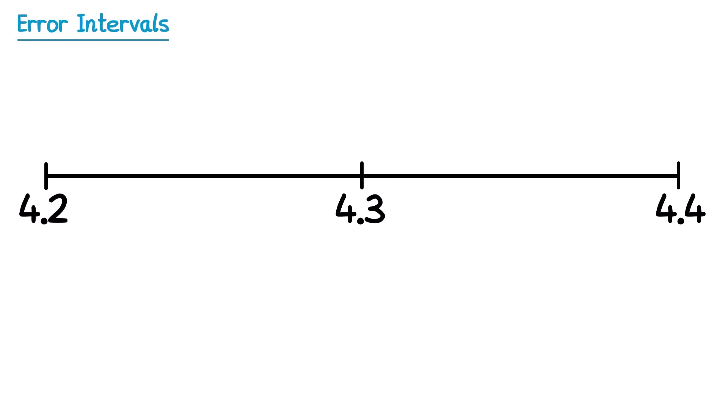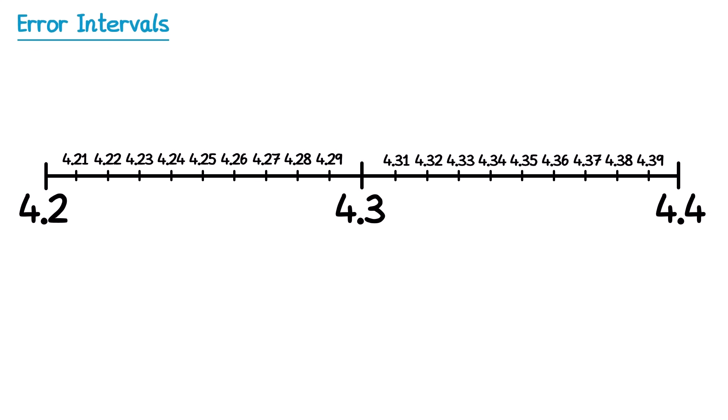We're also going to put the numbers that are in between these but to two decimal places. So the numbers in between 4.2 and 4.3 are these, and in between 4.3 and 4.4 are these.